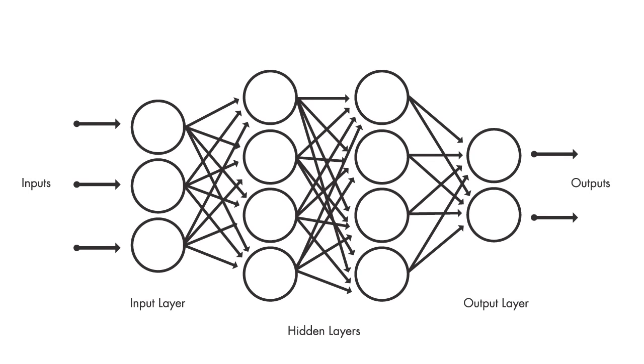The term deep usually refers to the number of hidden layers in the neural network. While traditional neural networks only contain two or three hidden layers, some of the recent deep networks have as many as 150 layers.